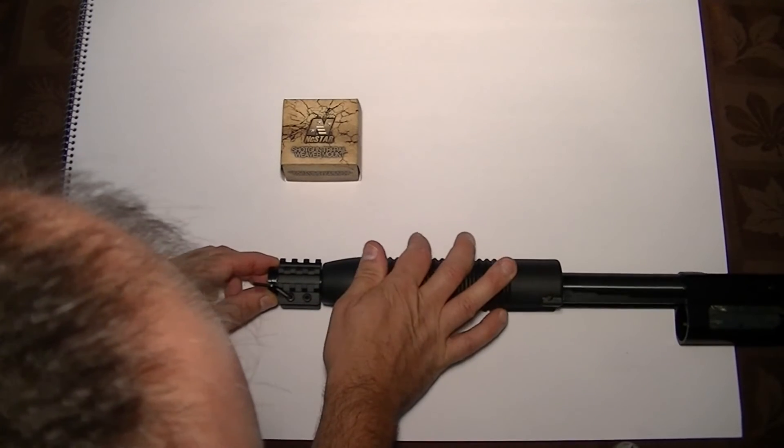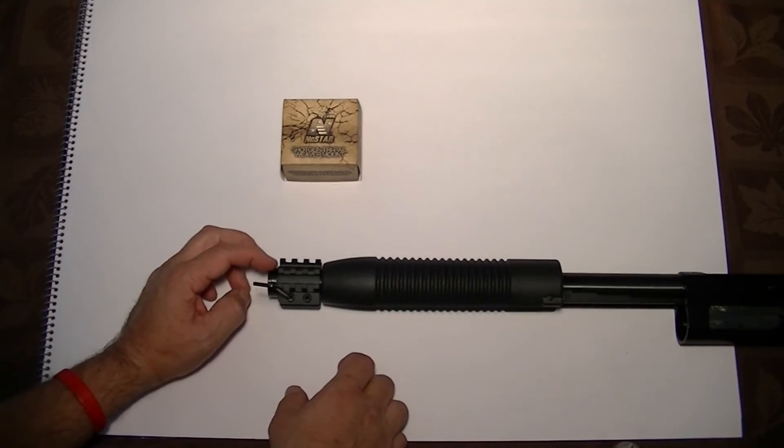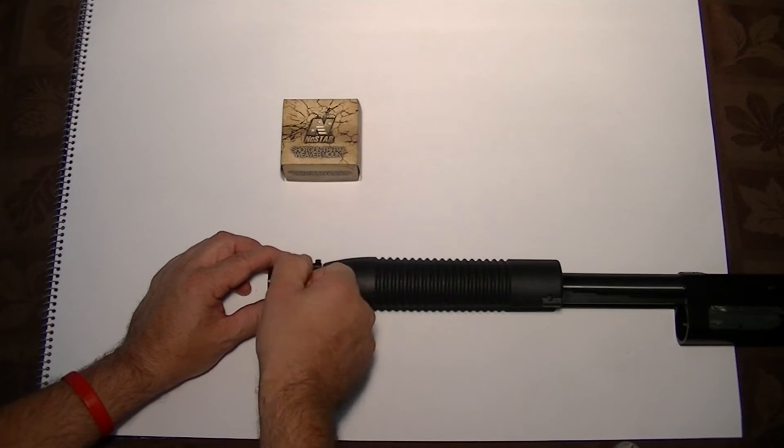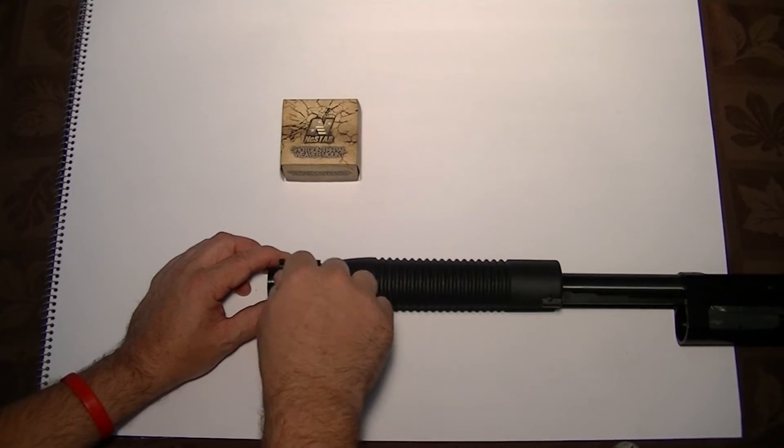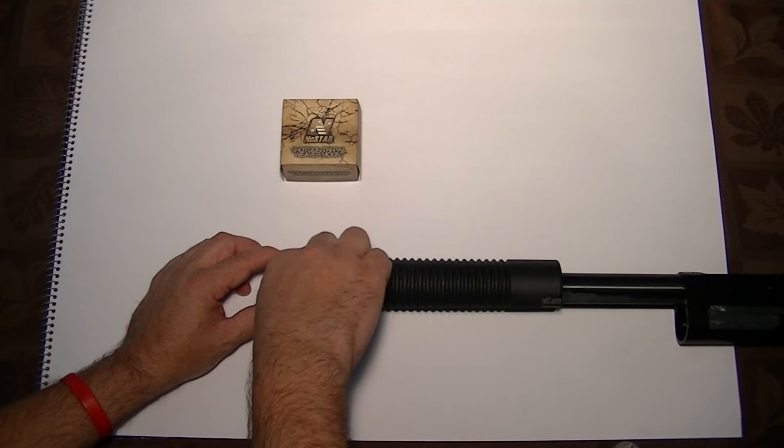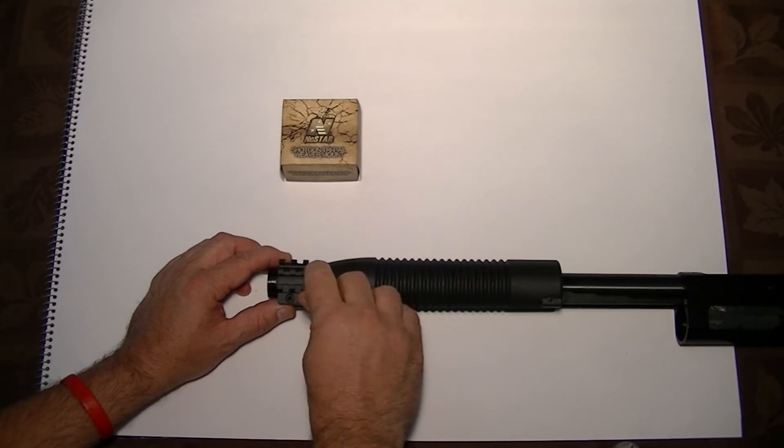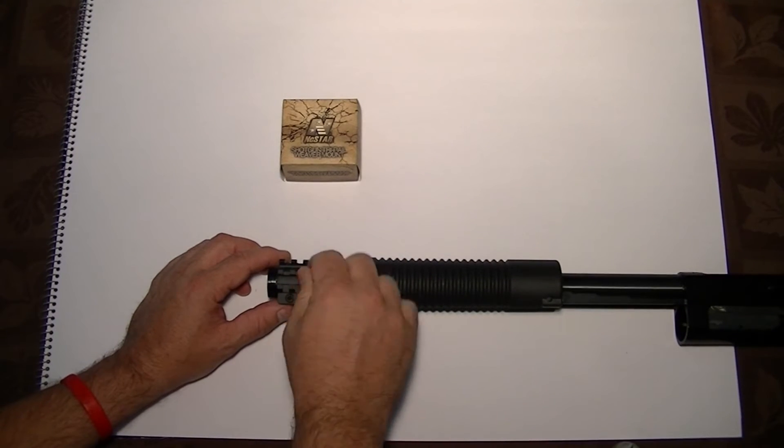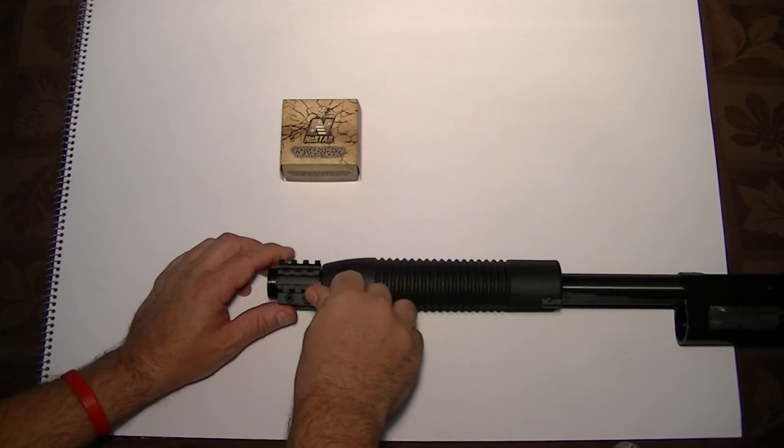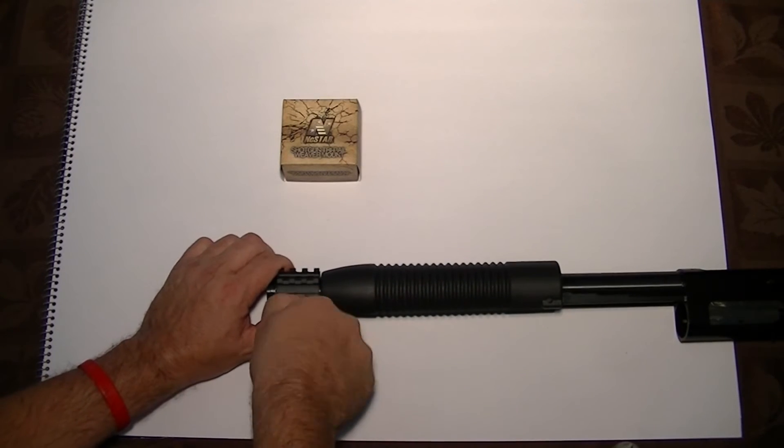As you can see, I left a little space between the forehand and the tri-rail, and on this end I also left some space as well. Use some leverage on it as I want this not to move.